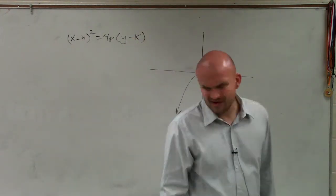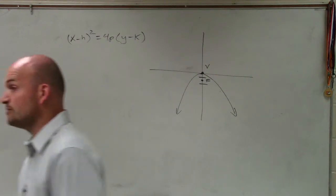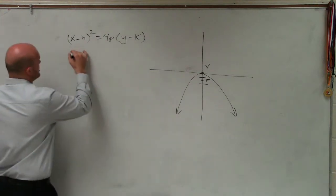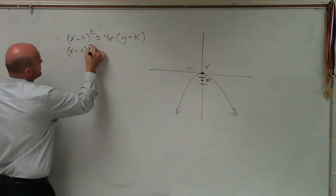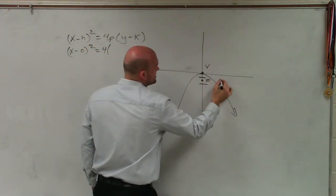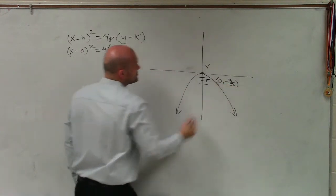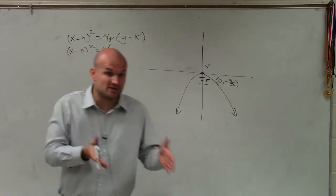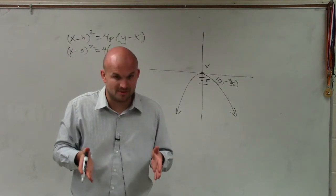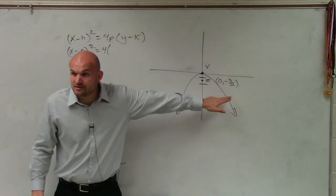They're asking for standard form. The vertex is at (0, 0), so I'll plug that in: x minus 0 squared equals 4 times p. Remember, they said the focus was at (0, negative 3 halves). So if the distance from the vertex to the focus is negative 3 halves, we know the p-value is negative 3 halves. Does that make sense? Vertex to the focus — that's the p value.